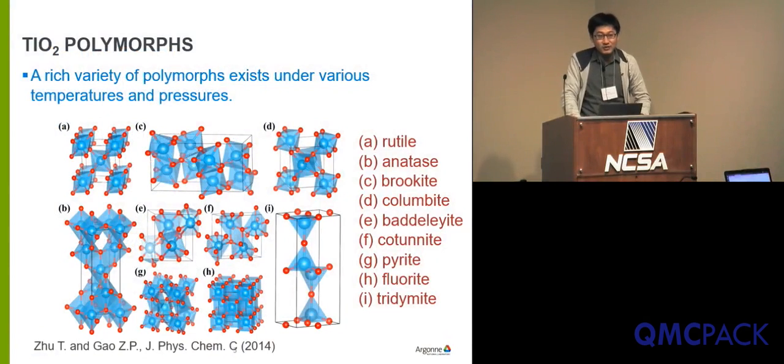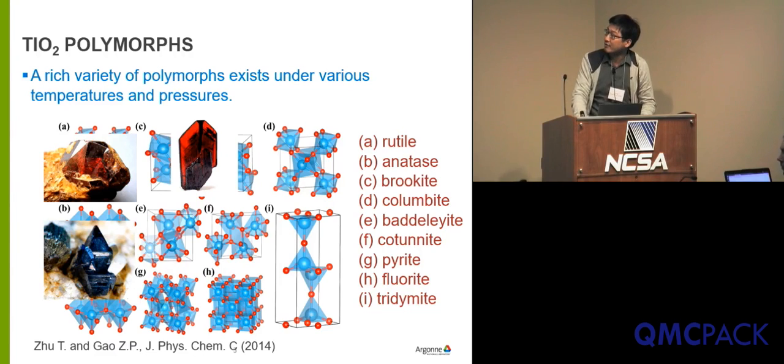Like many transitional metal oxides, titanium dioxide has abundant phases. It has a rich variety of polymorphs existing under various temperatures. There are so many listed in this paper, but we are not going to study all of them. We have our focus on the naturally existing minerals: the three, rutile, anatase, and brookite.